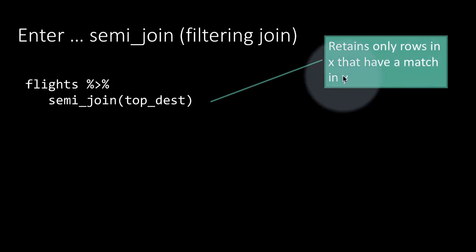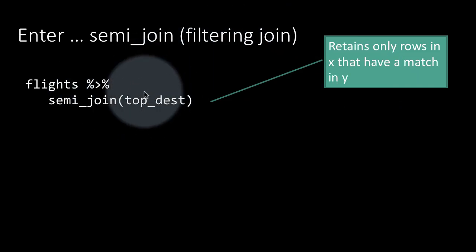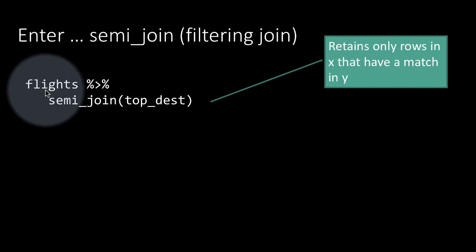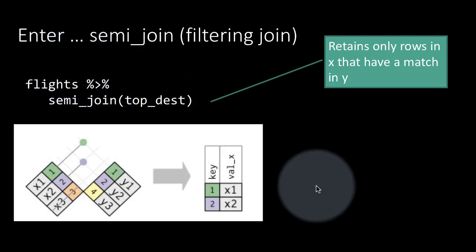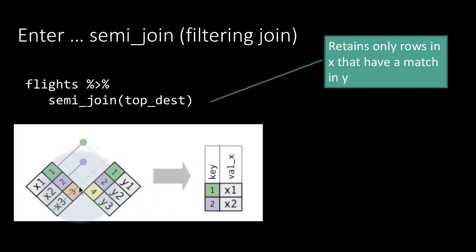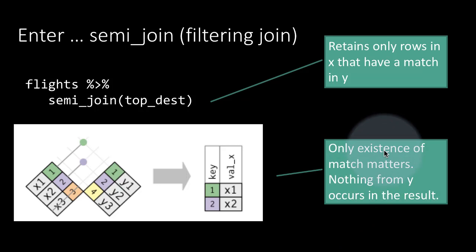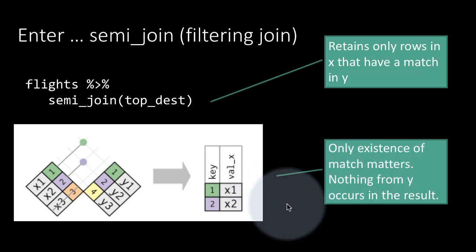It retains only those rows in x that have a match in y — that's why it's called a filtering join. Notice that no information from top dest is actually reported; all reported information comes only from flights, but which rows are reported is determined by those rows that have a match in the other table. In this particular example, only the first two rows will be returned because the third row doesn't have a match. So only the existence or non-existence of a match matters; nothing from y actually shows up in the result.